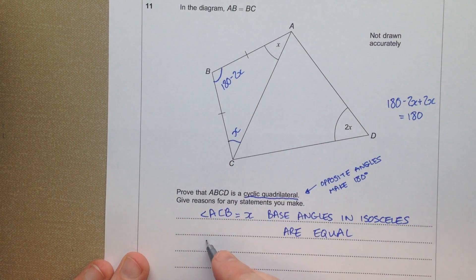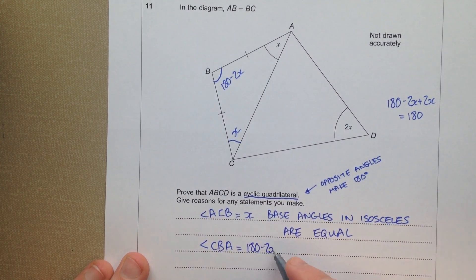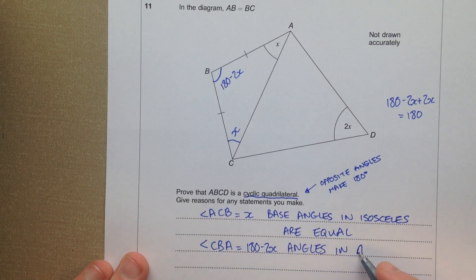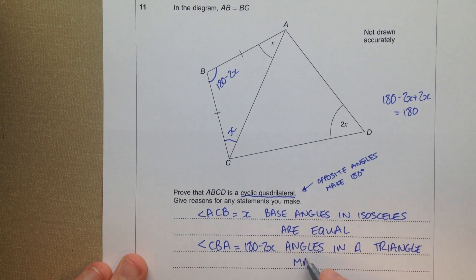This angle. This angle we did next. So we got angle CBA equals 180 take away 2x. Because angles in a triangle make 180.